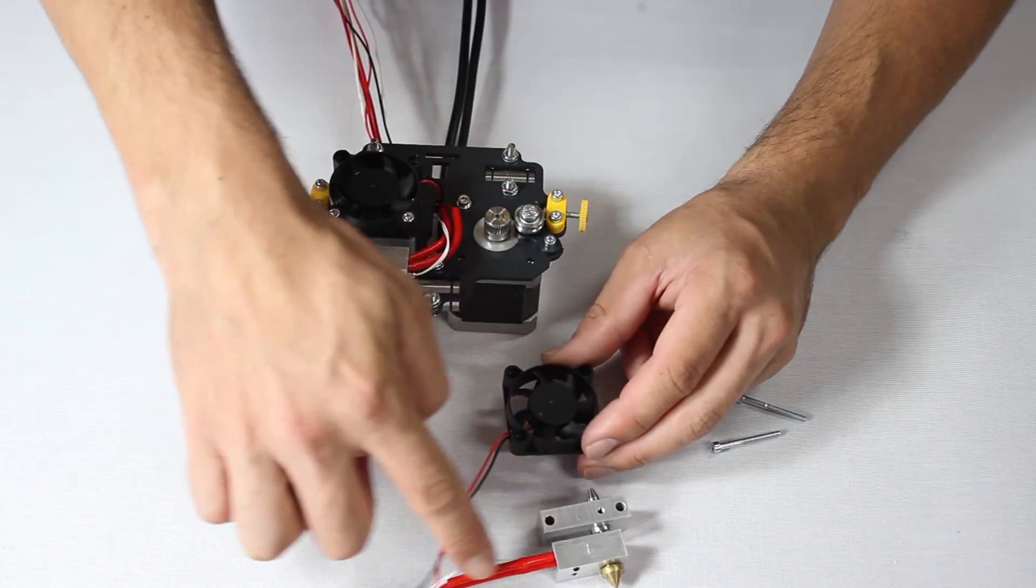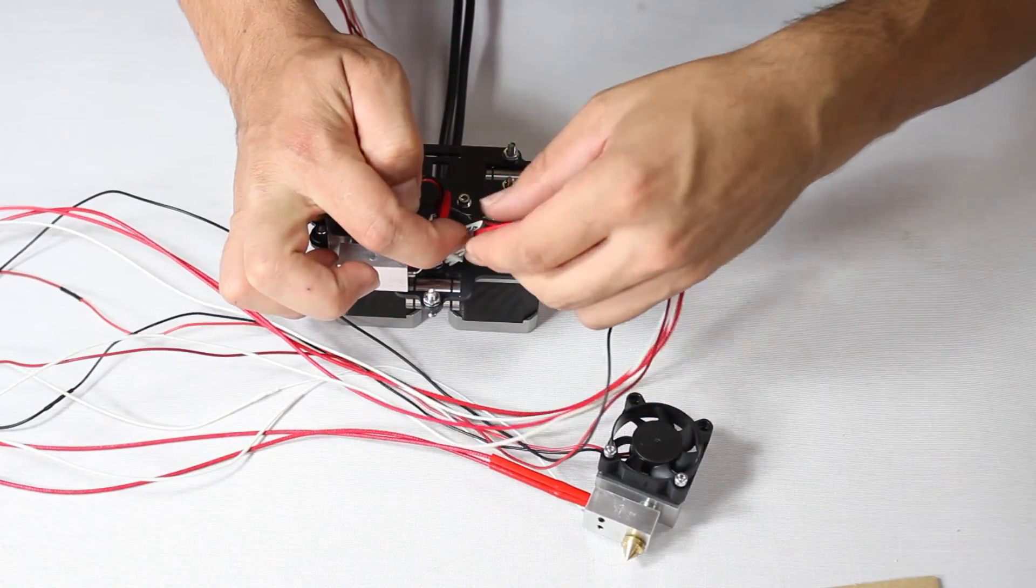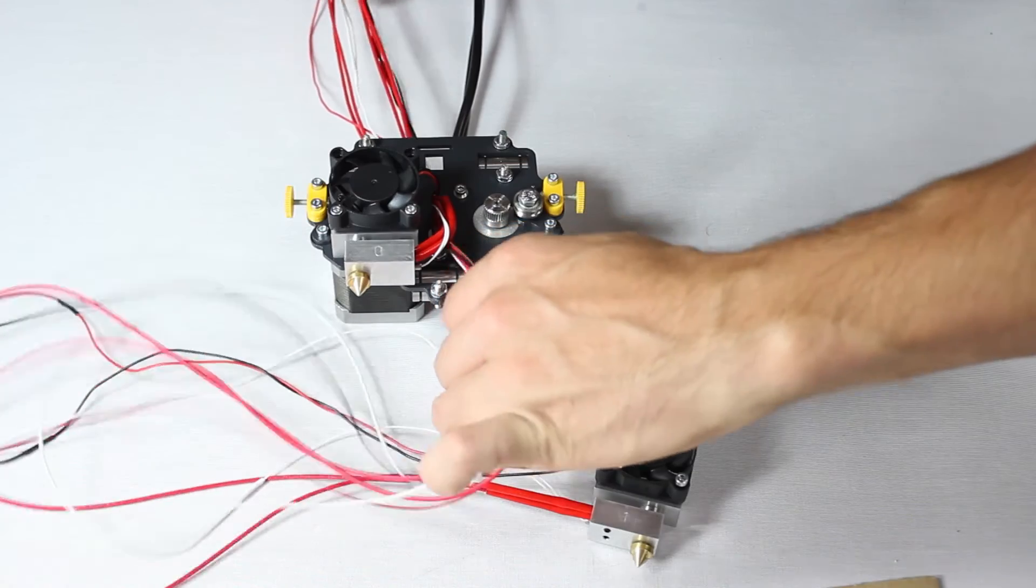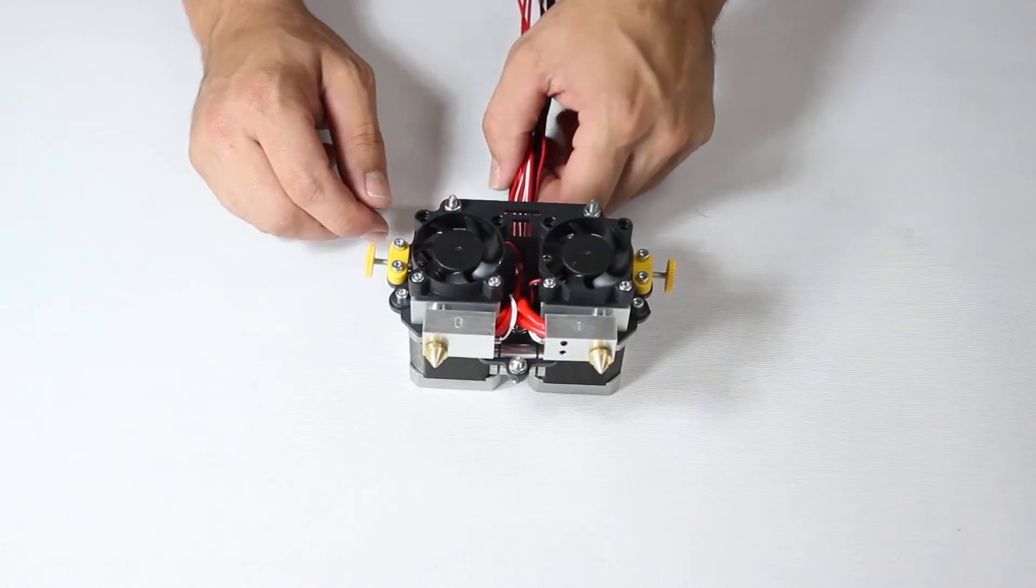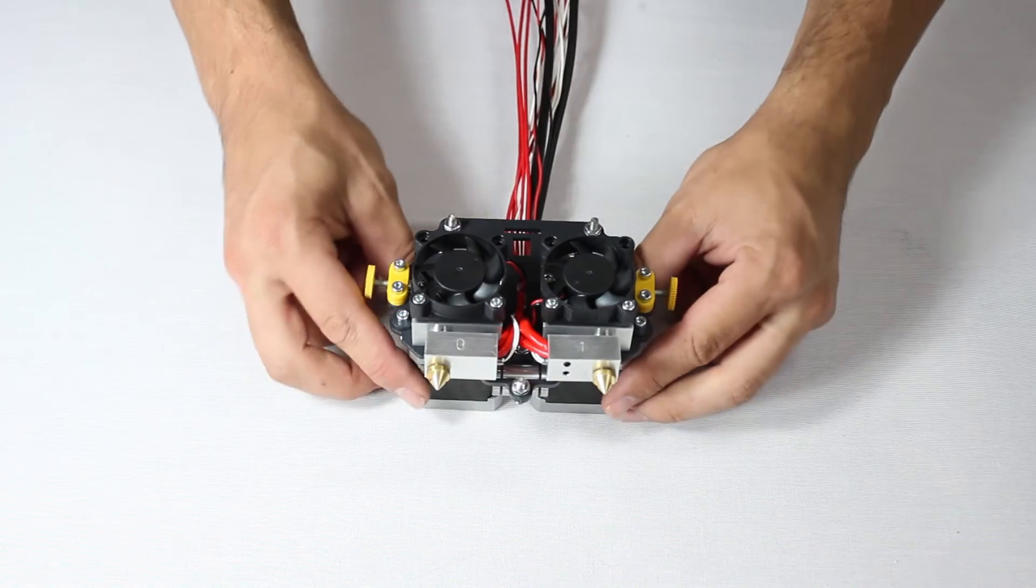Now repeat the same for the other extruder end and respective wiring. With this one, you might find it better to thread the wiring through the metal plate before screwing in the fan and the extruder end.